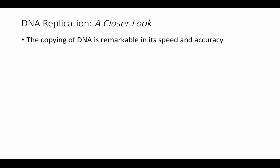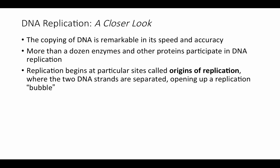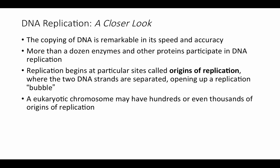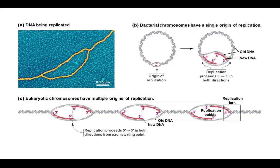DNA copying is remarkable in its speed and accuracy, and many enzymes and proteins participate. Replication begins at specific sites called origins of replication, where the two DNA strands separate and open up a replication bubble. Eukaryotic chromosomes may have hundreds or thousands of origins of replication, all replicating simultaneously. In prokaryotes, there is generally one replication bubble that moves around the circular chromosome. Replication proceeds in both directions from each origin, with each replication bubble having two replication forks — one at each end.